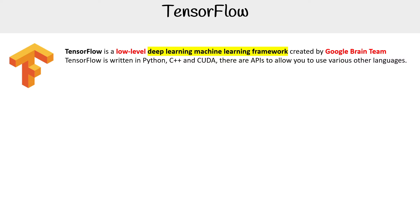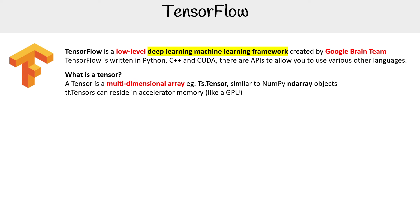There are APIs that allow you to use various other languages. TensorFlow is all based around this idea of a tensor. A tensor is a multi-dimensional array — they call it TF.tensor — and it's similar to a NumPy array object. TF tensors can reside in accelerator memory like a GPU, making them a new type of data structure specialized for machine learning.